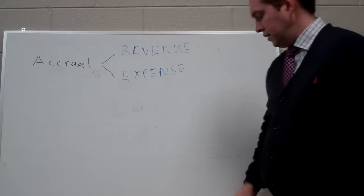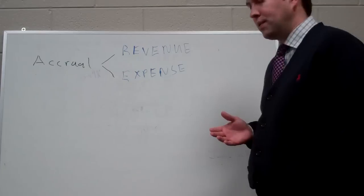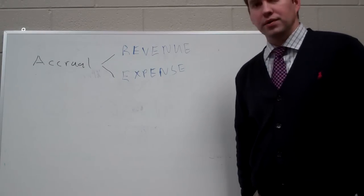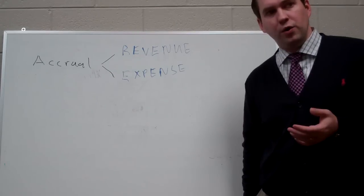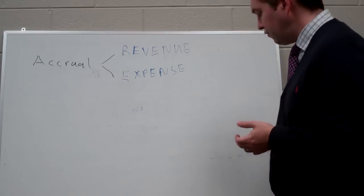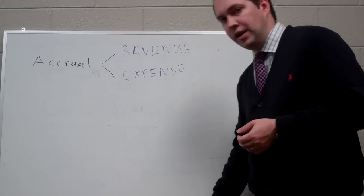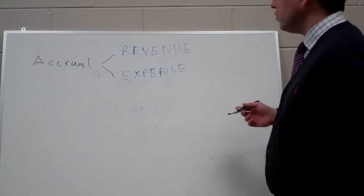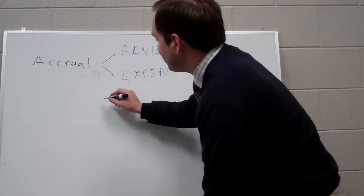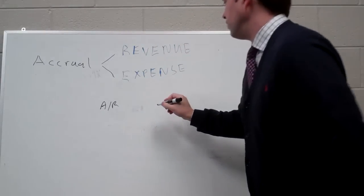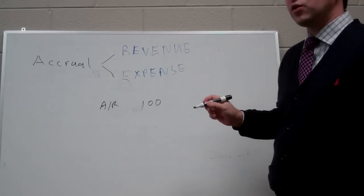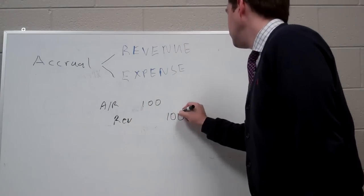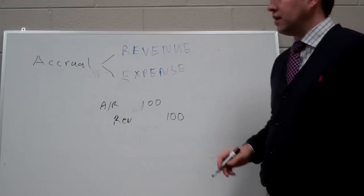Accrued revenue is where we need to record revenue now in the current period even though cash hasn't been exchanged yet. A good example is when you provide services for a customer now and they're going to pay you later. If you've performed the service in the current period, even though you haven't gotten cash yet, we need to go ahead and accrue that revenue. We do that by debiting an asset like accounts receivable for say $100 and then we need to credit revenue for $100 even though you haven't got any cash yet.